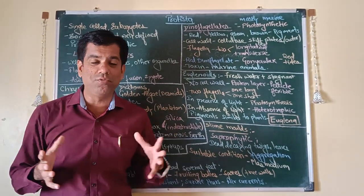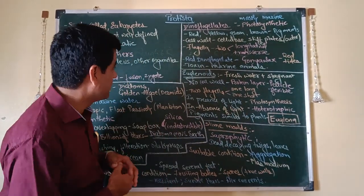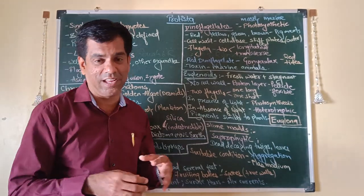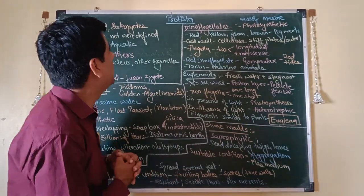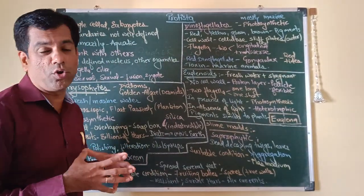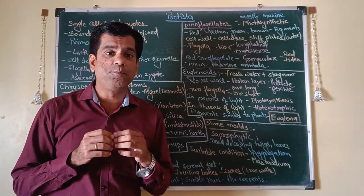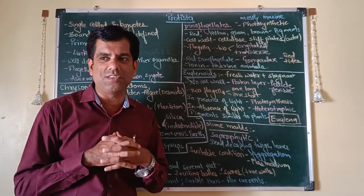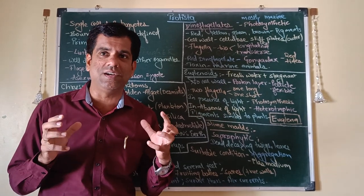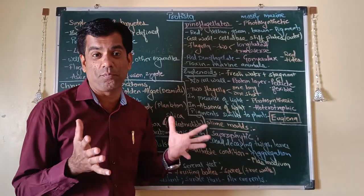Today we will be talking about this wonderful kingdom of Protista. When you talk about the five kingdom system of classification, we have the most diverse kingdom with very ill-defined boundaries, that is your Protista.